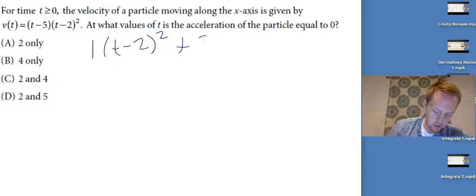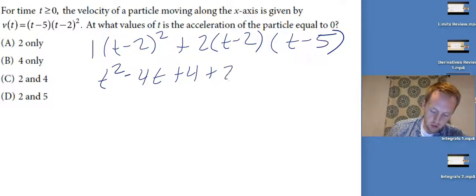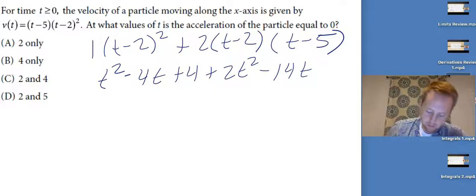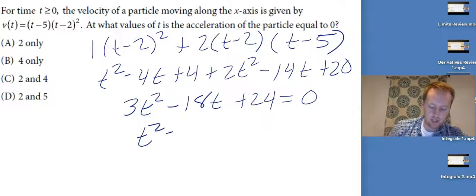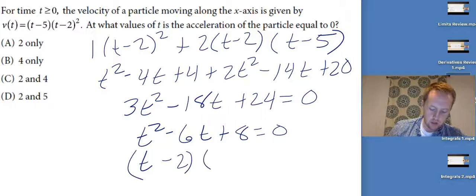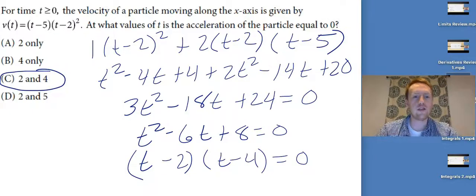...plus the derivative of the second — a little chain rule — times the first. Distributing gives t² - 4t + 4 + 2t² - 14t + 20, which becomes 3t² - 18t + 24 = 0. Factor out a 3: t² - 6t + 8 = 0, which factors to (t-2)(t-4). So the answer is t = 2 and t = 4. All I needed to know was that acceleration is the derivative of velocity; after that, it was just a normal calculus question.